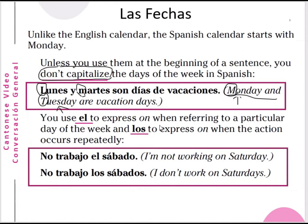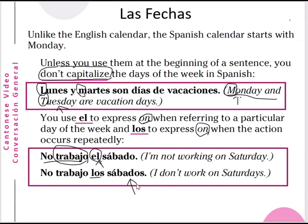You use 'el' to express 'on' with a specific day. When referring to a particular day of the week, and 'los' to express 'on' when the action occurs repeatedly. For example, 'No trabajo el sábado' means 'I am not working on Saturday' — this specific Saturday. But 'No trabajo los sábados' means 'I don't work on Saturdays' — every Saturday. So sábado becomes los sábados in the plural form.